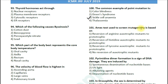Question number 101: The Ames test used to detect mutagenicity is based on — option 1: reversion of arginine auxotrophic mutants to prototropic; option 2: reversion of histidine auxotrophic mutants to prototropic; option 3: reversion of tyrosine auxotrophic mutants to prototropic. The correct answer is option number two — reversion of histidine auxotrophic mutants to prototropic.